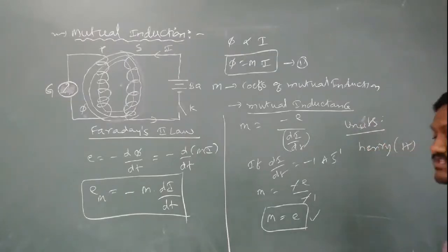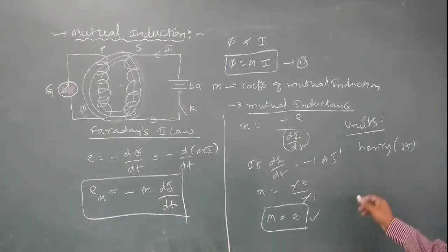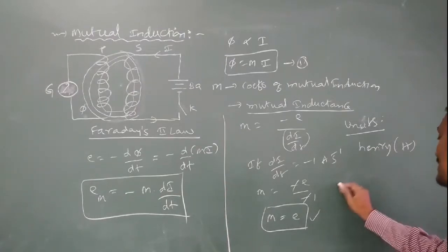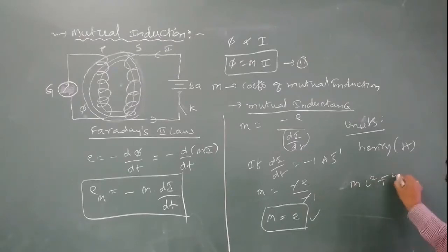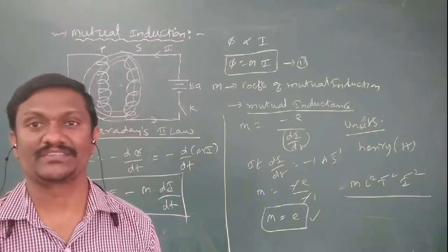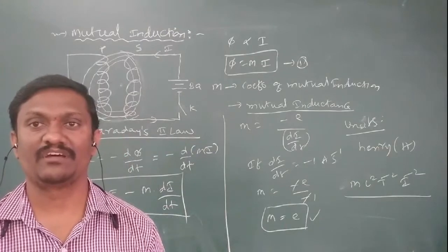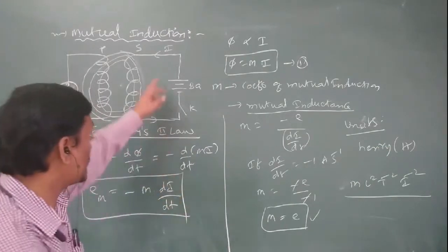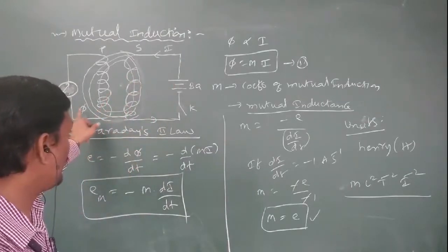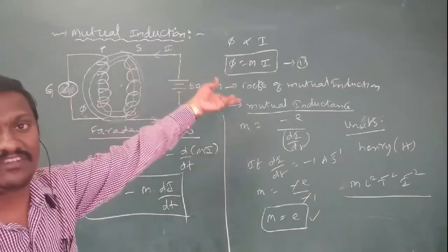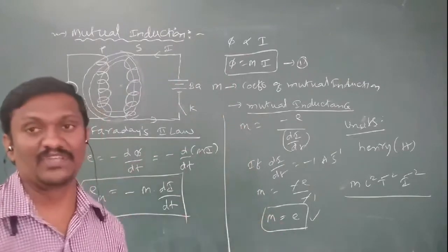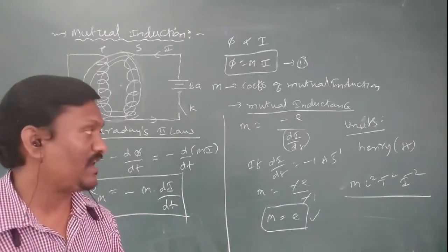The symbol for Henry is H. The dimensional formula of inductance — both self inductance and mutual inductance — is ML²T⁻²I⁻². That is the dimensional formula of mutual inductance. So mutual induction is the phenomenon where when current in the second coil changes, EMF is induced in the first coil. The unit of mutual inductance is Henry, and the dimensional formula is ML²T⁻²I⁻².